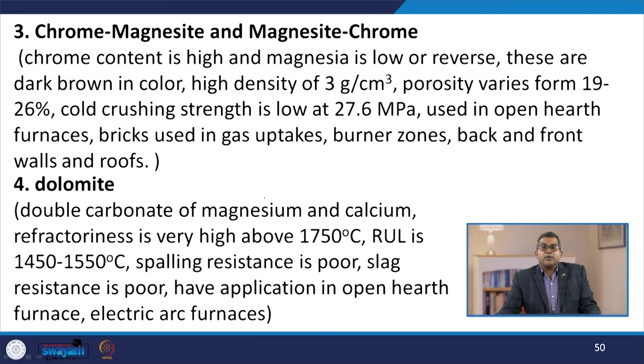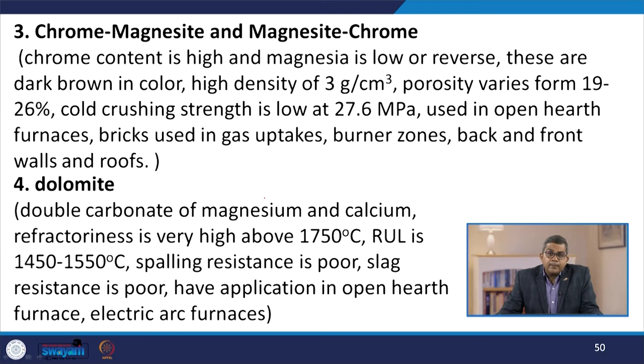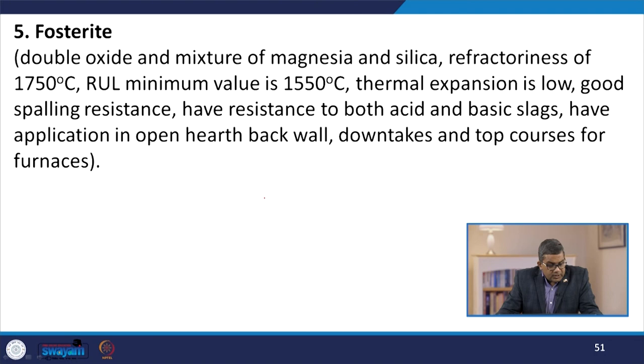Dolomite is the double carbonate of magnesium and calcium refractory, with very high refractoriness above 1750°C, RUL of 1450 to 1550°C, poor spalling resistance, and poor slag resistance; used in open-hearth and electric arc furnaces. Fosterite is the double oxide and mixture of magnesia and silica, with refractoriness around 1750°C, minimum RUL of 1550°C, low thermal expansion, good spalling resistance, and resistance to both acid and basic slags; used in open-hearth back walls, downtakes, and top courses of furnaces.